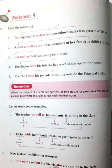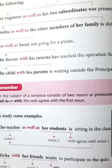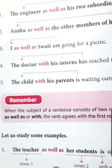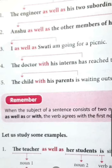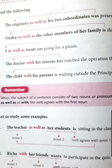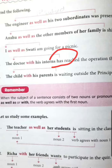Now the next sentence: 'I as well as Swati am going for a picnic.' The verb agrees according to the first subject, and with 'I' it will be 'am'. The doctor with his interns has reached the operation theatre. Again, the verb will be according to the first subject. The doctor is singular and the verb will be 'has' — it is singular.